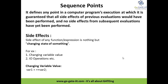A sequence point defines any point in a computer program's execution at which it is guaranteed that all side effects of previous evaluations would have been performed, and no side effects from subsequent evaluations have yet been performed. We'll see shortly what side effects of a programming execution are, but first let us understand what this sequence points definition means.